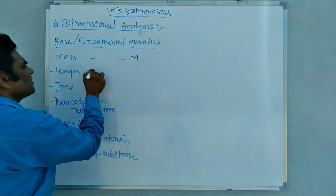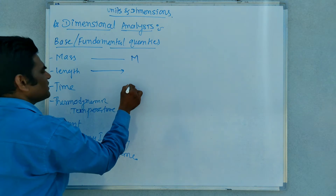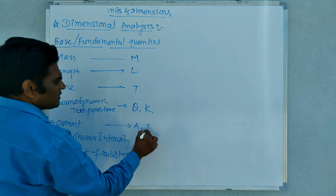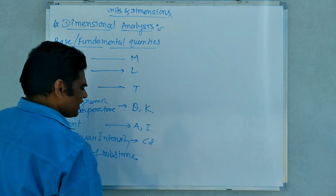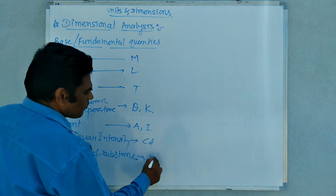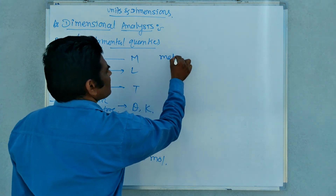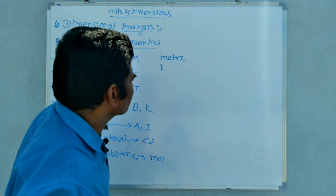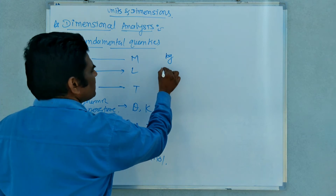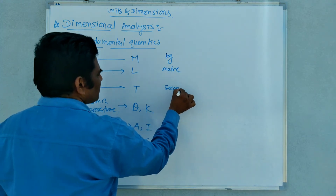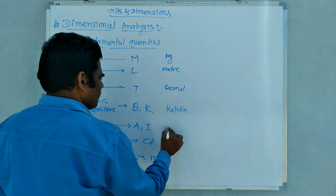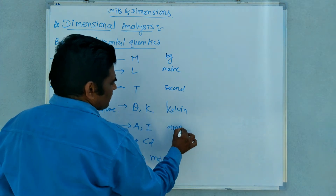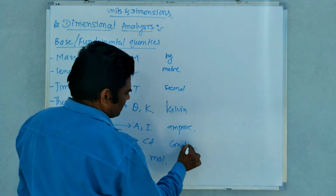The notations for these are: mass is represented by capital M, time by T, length by L, thermodynamic temperature by theta or Kelvin, current by A or I depending on the book, luminous intensity's unit is candela so symbol is cd, and amount of substance uses the symbol mole. The units are: kilogram for mass, meter (m) for length, Kelvin (K) for temperature, ampere (A) for current, candela (cd) for luminous intensity, and mole for amount of substance.